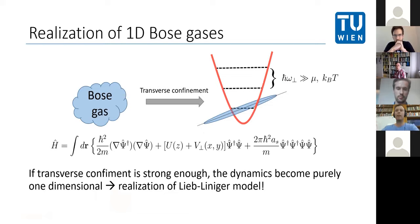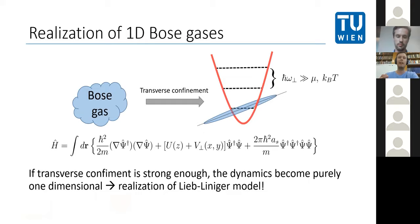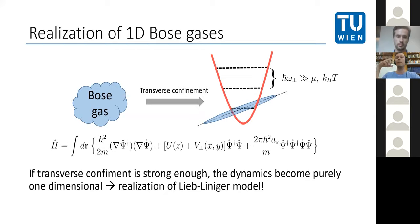Starting with a quick reminder of how 1D Bose gases are realized experimentally: a cold cloud of bosons is obtained via laser cooling and evaporative cooling, then loaded into a very tight transverse confinement. If the level spacing in the transverse confinement is sufficiently large — larger than all other energy scales such as the chemical potential and thermal energy scale — then the gas is effectively one-dimensional, and we end up with the Lieb-Liniger Hamiltonian.